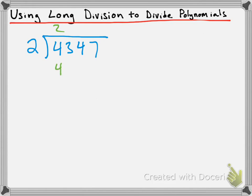2 times 2 is 4. Then what we're going to do is subtract those two values, so 4 minus 4 is 0. Next thing we do is we bring down the 3 and repeat the process. How many times does 2 go into that 3? It only goes in once, so we place a 1 up top. 1 times 2 is 2. We subtract 2 from 3 and we get 1.